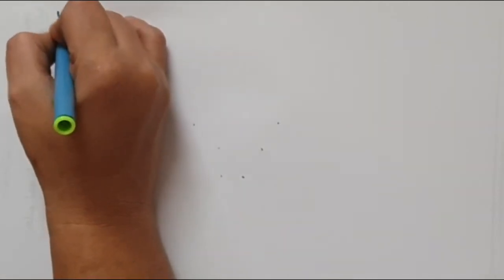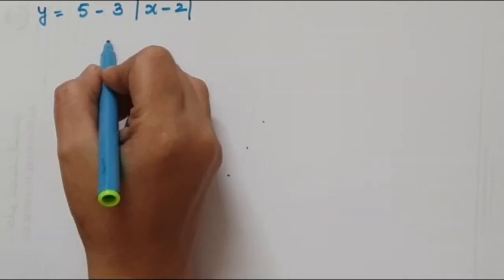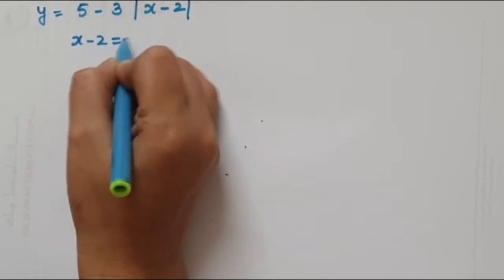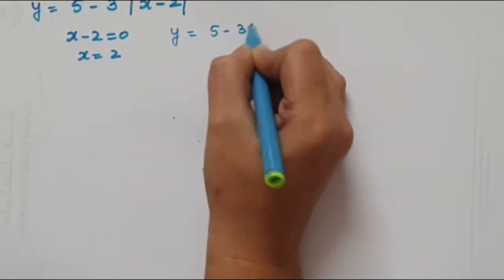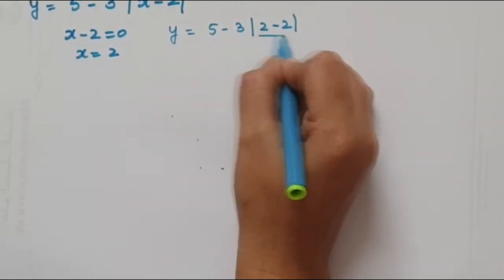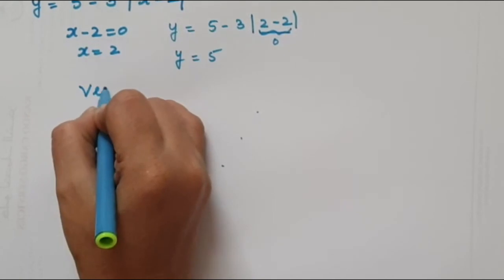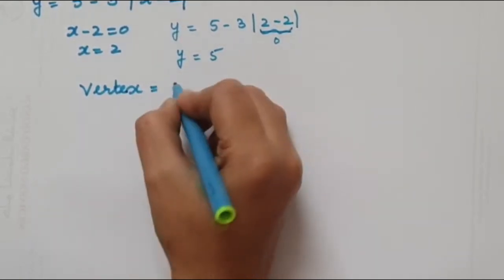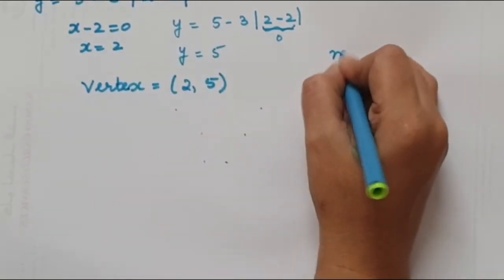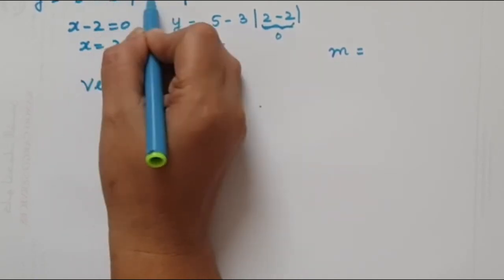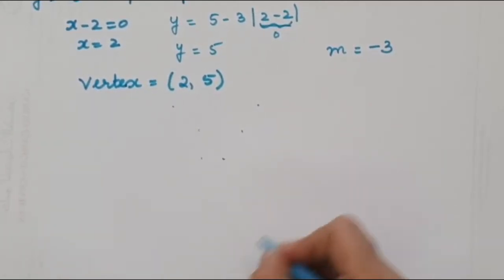Suppose our graph is y = 5 - 3|x - 2|. First find the vertex: set x - 2 = 0, so x = 2. Substitute into y: y = 5 - 3(0) = 5. So the vertex is (2, 5). The slope is -3, and since it is negative, the curve opens downward.